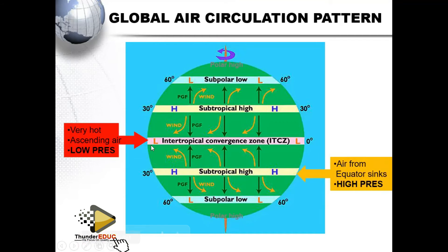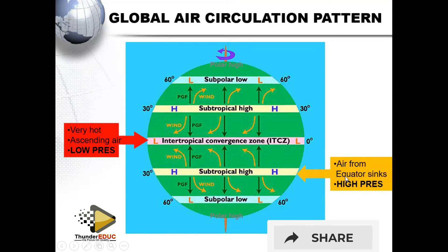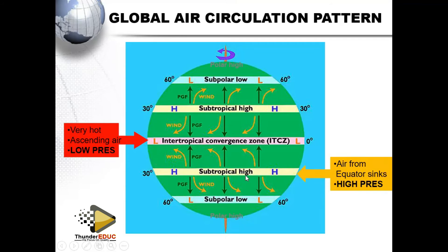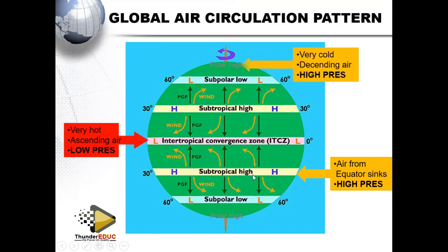At the subtropical high pressure, air is moving from the equator and sinking here. As it moves from the equator in the upper atmosphere, it sinks at the subtropical high. Then when it moves from the subtropical high towards the subpolar low pressure, it rises again. That's why we say it is rising air at the subpolar zone.